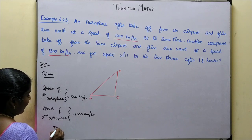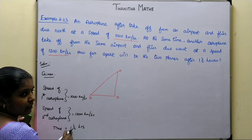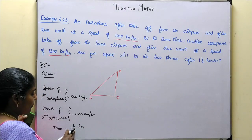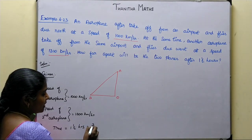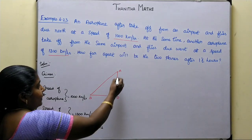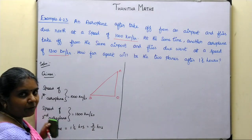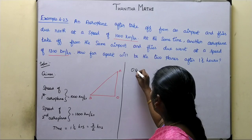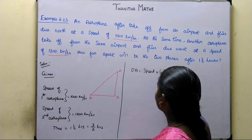Time of travel is 1 and a half hours. Now we have to find the distance traveled. Distance traveled by plane 1 — first plane distance is OA. We have to find the distance. OA is equal to speed into time.